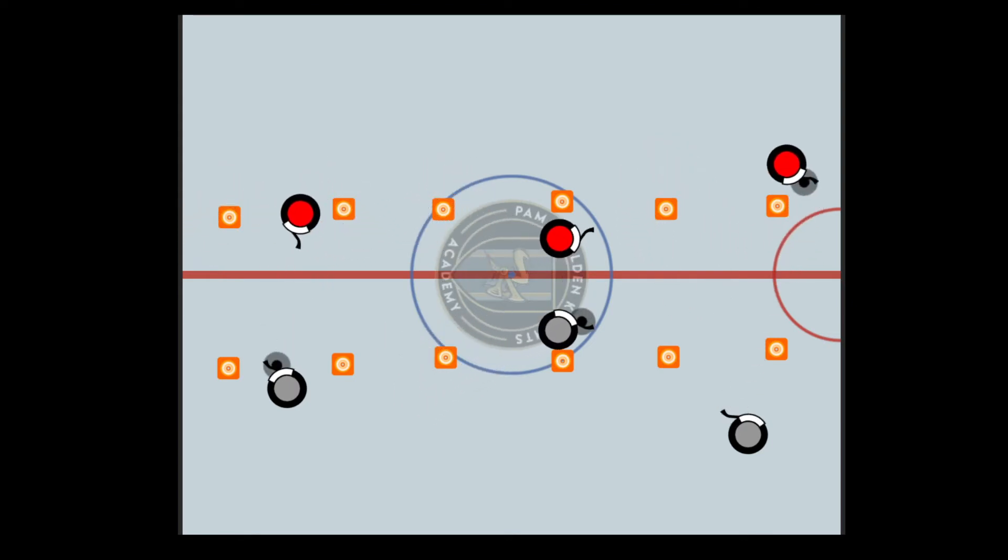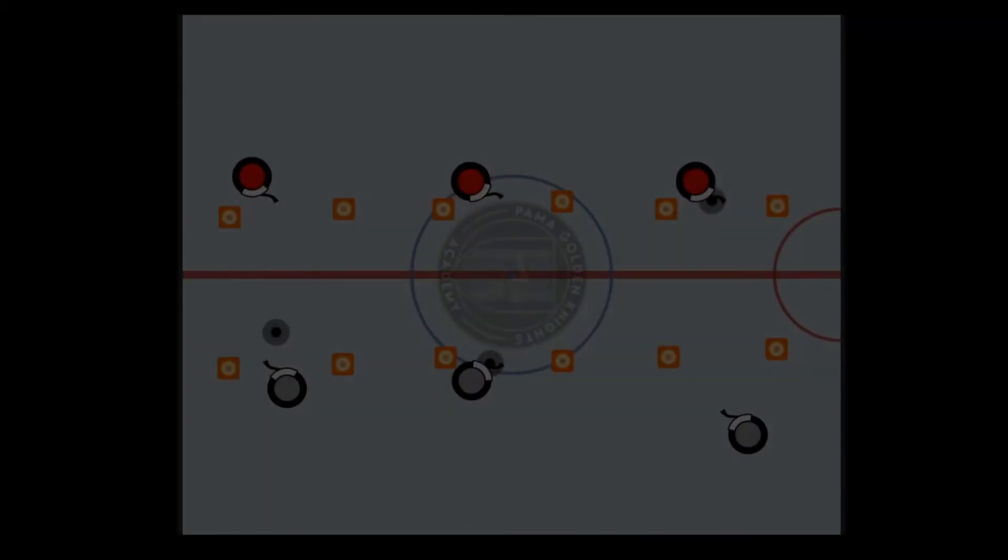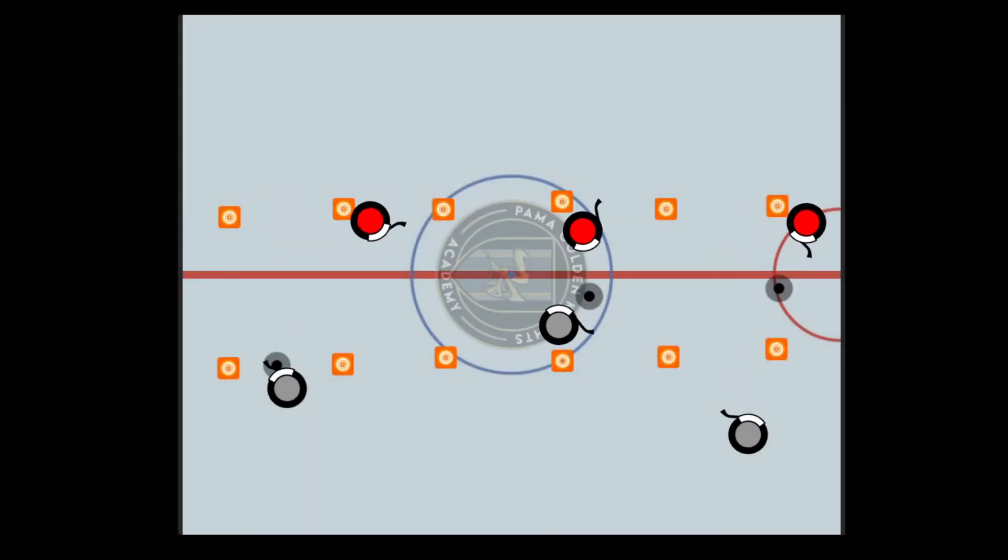Variation 1: One player is skating around the pylons and exchanges as many passes as possible with his stationary partner.